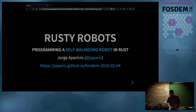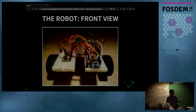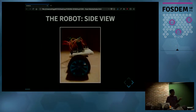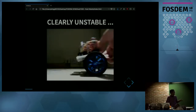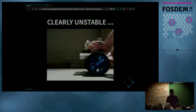This is the robot — this is the front view. You can see it's a wheeled robot and only has two wheels. The mesh of wire on top is the electronics that will control it. There's a Cortex-M controller in there among other things. And this is the side view. You can see it only has two wheels, no extra support point. The robot is clearly unstable — it will always fall to either side.